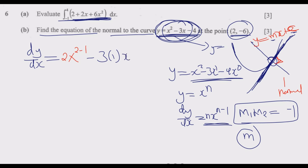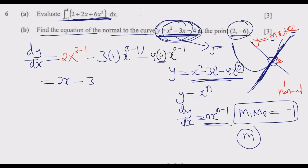The next term: the coefficient is negative 3 and the power is 1, so it gives negative 3 times x to the power 1 minus 1, which is negative 3x to the power 0, which equals negative 3. The last term has power 0, so 4 times 0 gives zero — it drops out entirely. So dy/dx equals 2x minus 3.